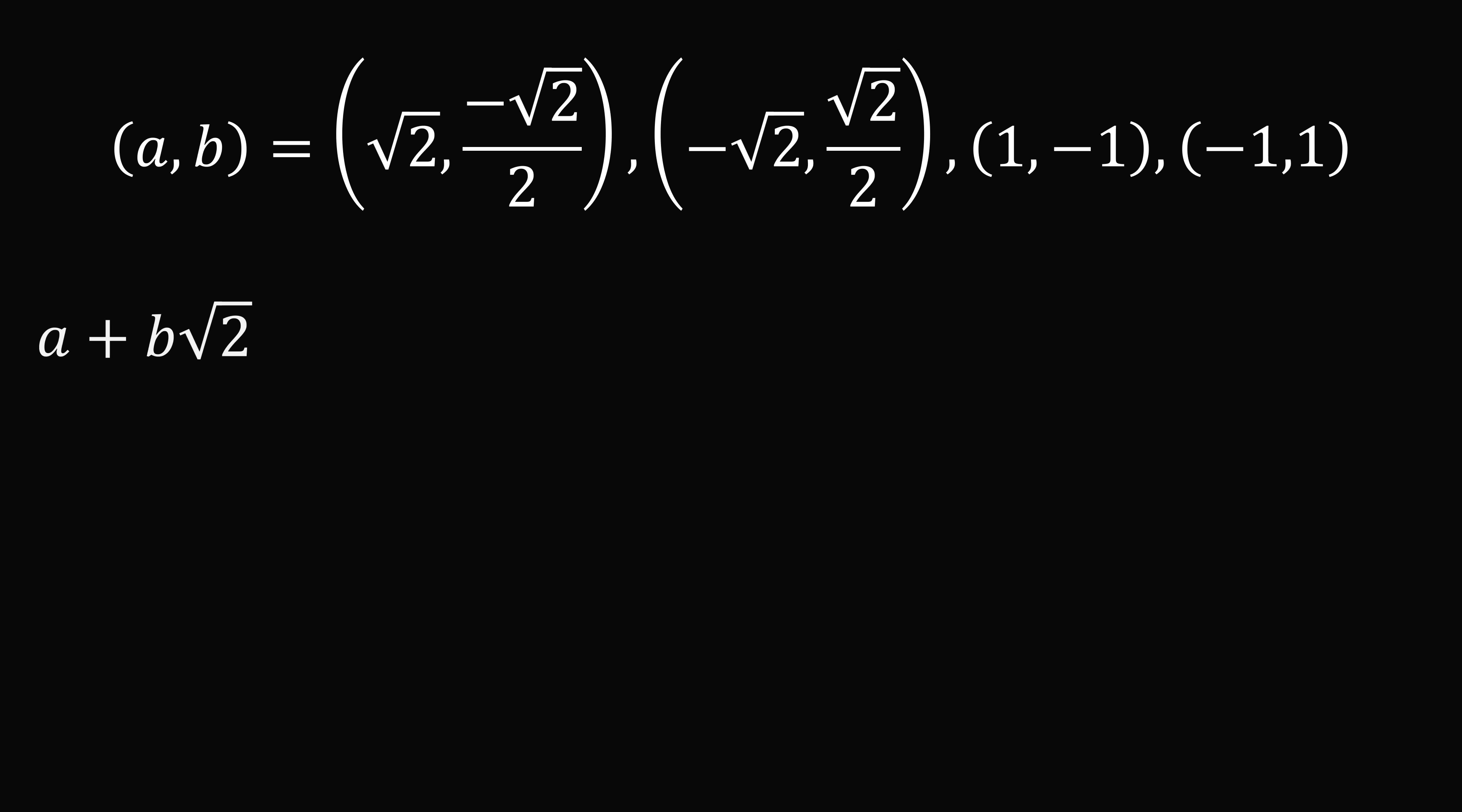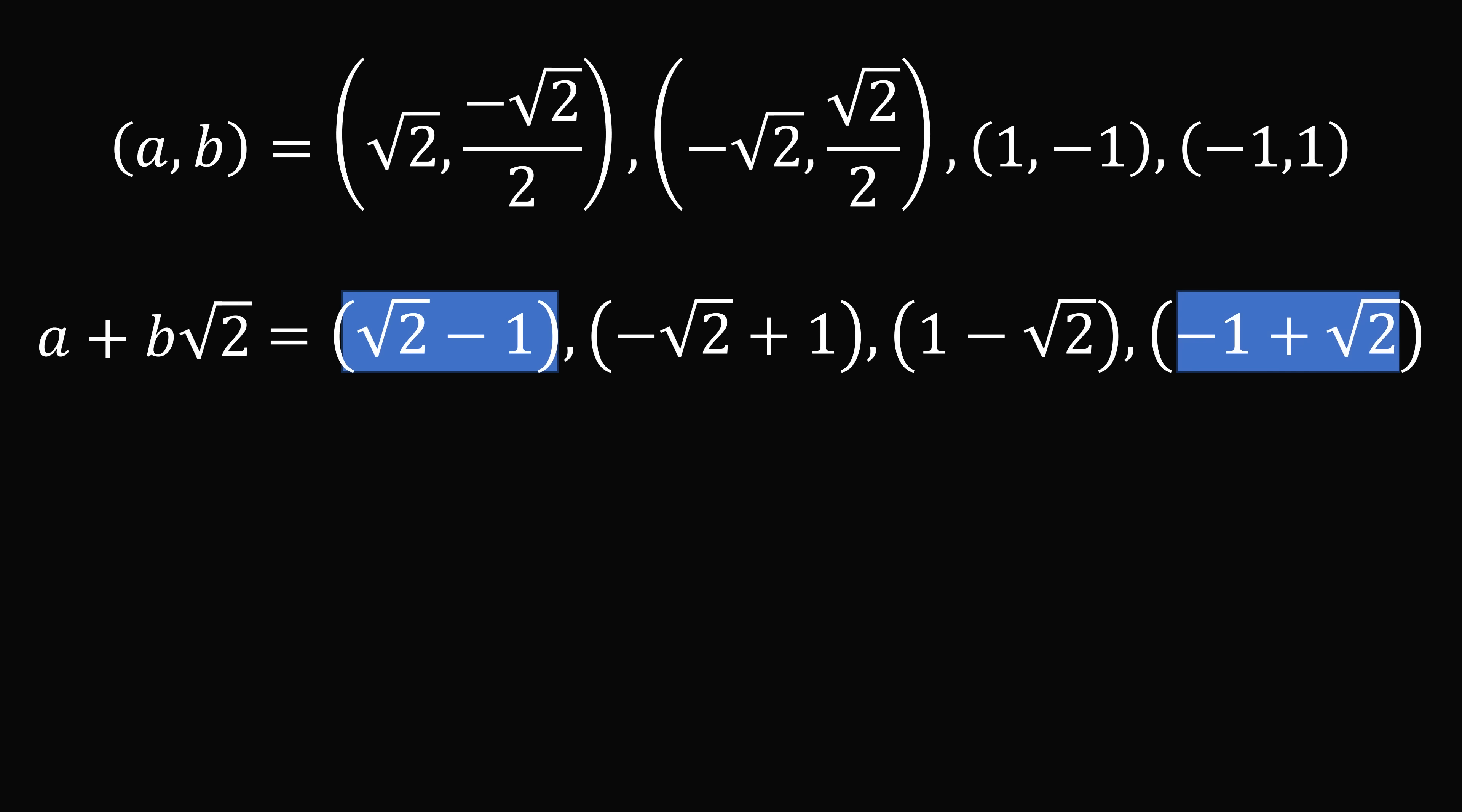Now remember, this is a plus b root 2. So let's substitute in these values for a and b. So we end up with the following four results. But if you look closely, some of these are repeats. So square root of 2 minus 1 is the same thing as minus 1 plus root 2, and minus root 2 plus 1 is the same thing as 1 minus root 2. So there are really only two values we want to deal with.